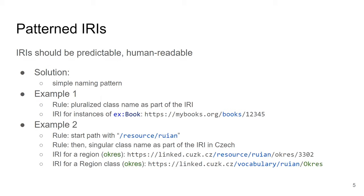Here we have an example from RÚIAN — the registry of all addresses and buildings in the Czech Republic. Each one has an IRI, making it a good example. We can see how to have a pattern IRI for resources and a pattern IRI for classes. For resources, the pattern uses HTTPS, the domain name, then 'resource', 'rúian', the type, and some ID. For classes, we use 'vocabulary', 'rúian', and the class name with an uppercase letter. We create a rule and stick to it when creating IRIs for other resources and classes.